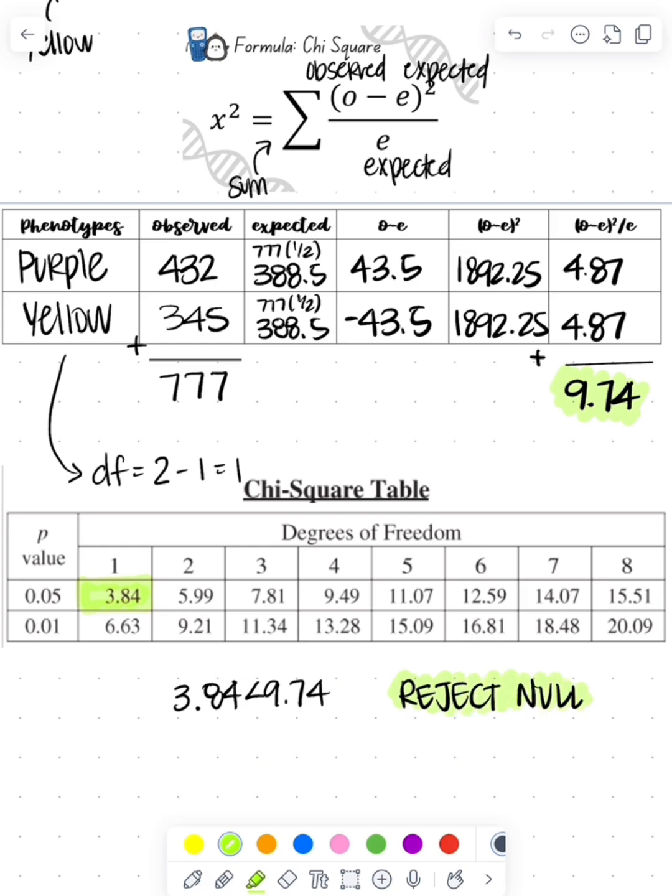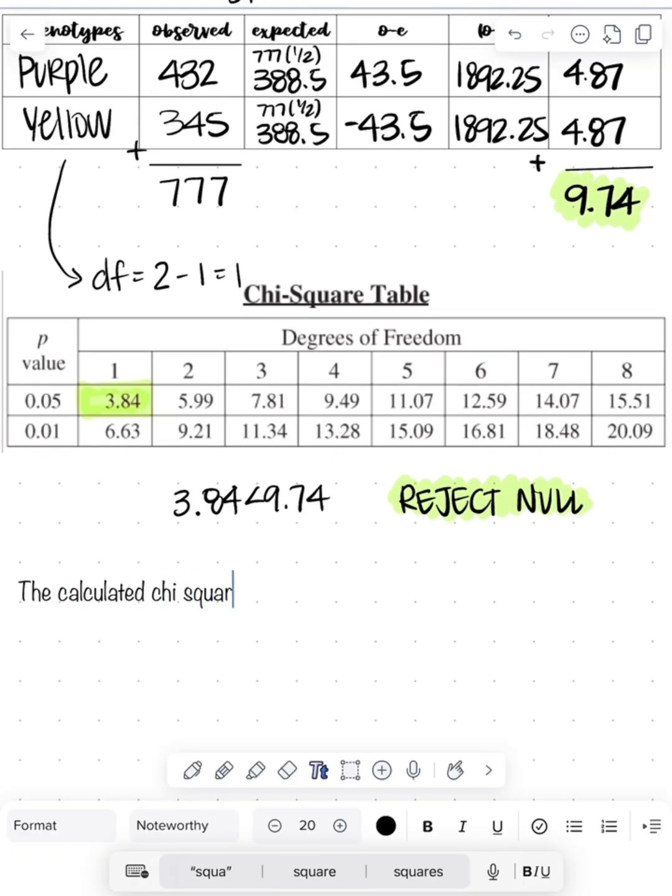Because what we're seeing here is that our data did not follow what we expected. And so since it didn't follow what we expected we need to reject that null hypothesis.